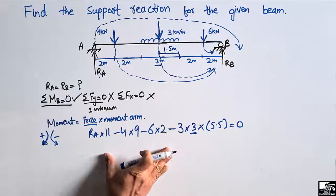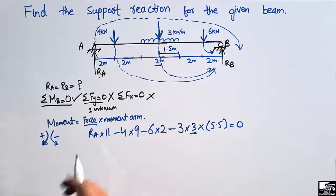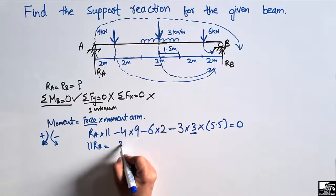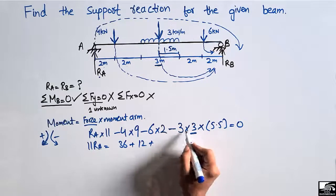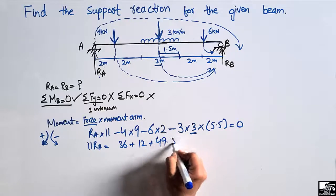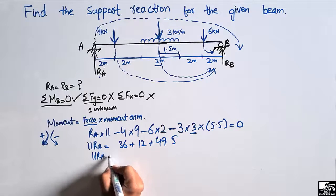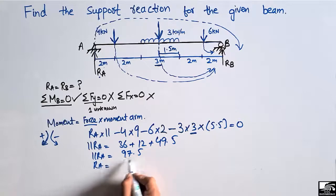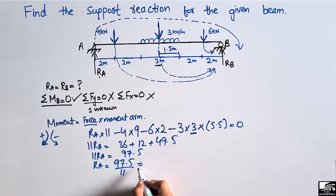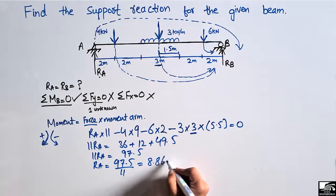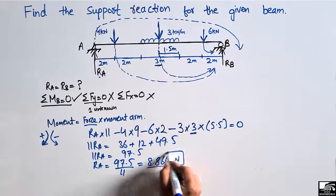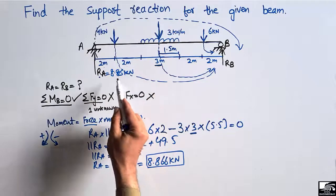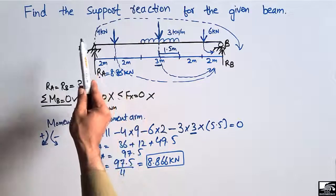Setting the summation of moments about point B equal to zero and solving: RA × 11 = 4 × 9 + 6 × 2 + 9 × 5.5, which gives RA × 11 = 36 + 12 + 49.5 = 97.5. Dividing 97.5 by 11, we get RA = 8.866 kN. So the support reaction at A is 8.86 kN.